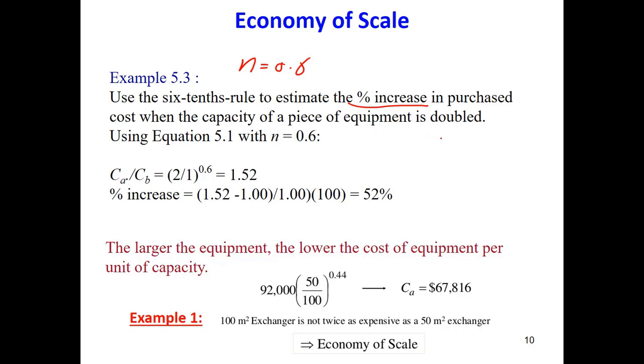So we want to calculate the price of a piece of equipment that we don't know what equipment, we don't care. The only thing that we know is that the capacity, let's say the flow rate, the power, whatever it is, is doubled. It means AA over AB is double, is 2. So we have this equation.